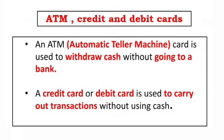ATM, Credit and Debit Cards. ATM stands for Automatic Teller Machine. An ATM card is used to withdraw cash without going to a bank. A credit card or debit card is used to carry out transactions without using cash. An account holder can get such a card on request to the bank.